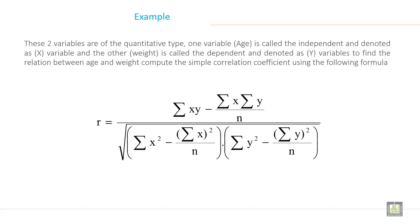These two variables are the quantitative type. One variable, age, is called the independent and denoted as x variable, and the other, weight, is called the dependent variable and denoted by y. To find the relation between age and weight, compute the simple correlation coefficient using this Carl Pearson formula.